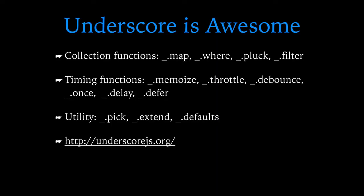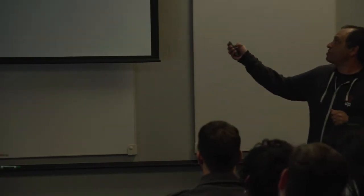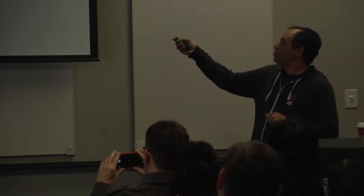Underscore is a dependency of Backbone, and it's another very important, awesome JavaScript library. I'm not going to go into all of Underscore's features, but while you're out there exploring Backbone — which is my goal here, to get you excited — go check out Underscore. It's referenced right from the Backbone site. It has really useful functions like filter, map, and where that you can run on collections.